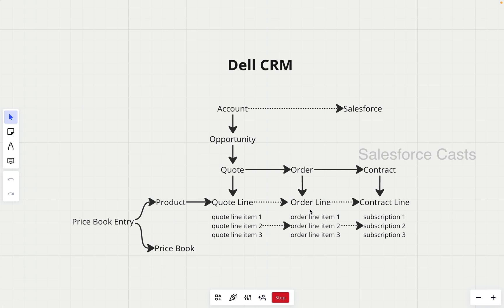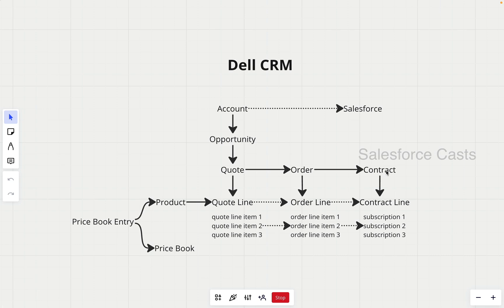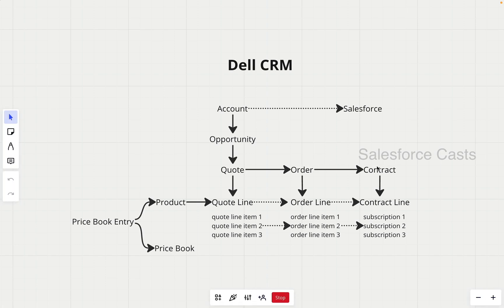Once the order is contracted, the contract record will be created. A contract is more or less an agreement between both the buyer and the seller — it is going to have a start date, end date, tenure, and so on. So once the order is contracted, the contract record will be created, and 3 subscriptions will be created. These are nothing but the clones of the order line items. The 3 order line items will be carried forward as subscription records, and the parent of the subscription records is going to be the newly created contract record.